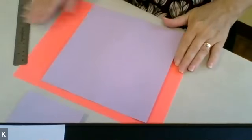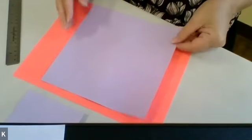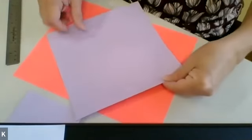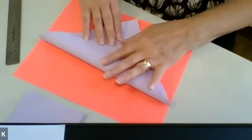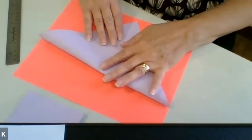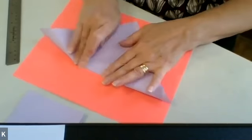The first thing you're going to do is take this piece of paper, the square one. You're going to turn it like so, it's a diamond, and you're going to bring it down like that and then fold it.